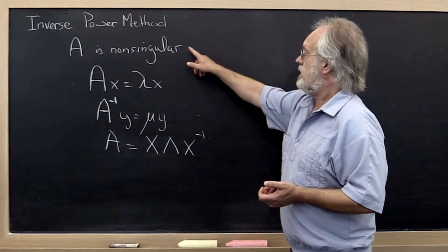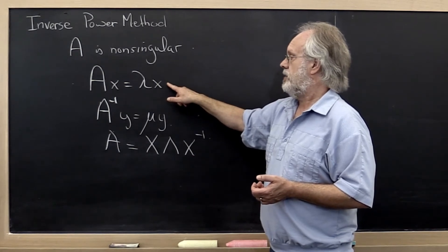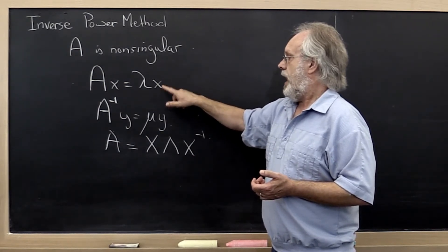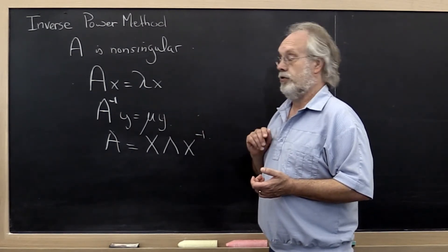In a homework, we're going to ask you the question: if we know an eigenvalue and eigenvector of A, how can we conveniently come up with an eigenvalue and eigenvector for A inverse?